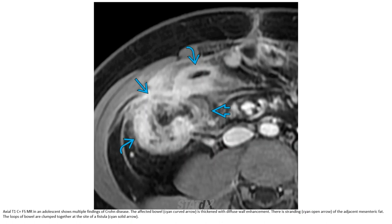T1 post-contrast MRI showing multiple findings of chronic disease. The affected bowel is thickened with diffuse wall enhancement. There is stranding of the adjacent mesenteric fat. The loops of bowel have clumped together at the site of a fistula.